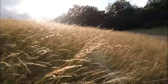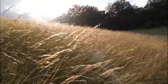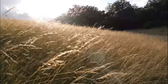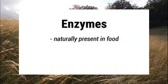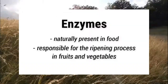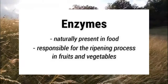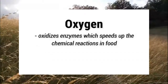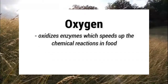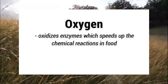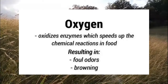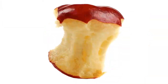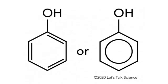The next factor is oxygen. Every living organism uses specialized proteins called enzymes to drive chemical reactions. Enzymes are naturally present in food and are responsible for the ripening process in fruits and vegetables. Oxygen oxidizes enzymes, which speeds up chemical reactions in food, resulting in foul odors and browning.